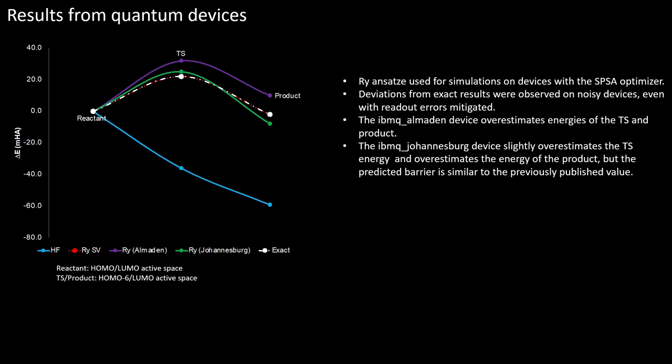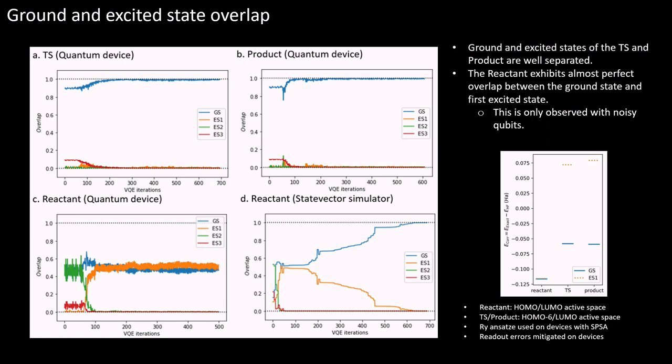Deviations from exact results were observed on noisy devices. The IBM Q Almaden device overestimates energies of the transition state and product by 10 and 12 mH respectively. The IBM Q Johannesburg device slightly overestimates transition state energy by 3 mH and underestimates the energy of the product by 6 mH. Overall, quite accurate results were obtained on the IBM Q Johannesburg device, with a barrier of 25 mH, which is on par with previously published values.